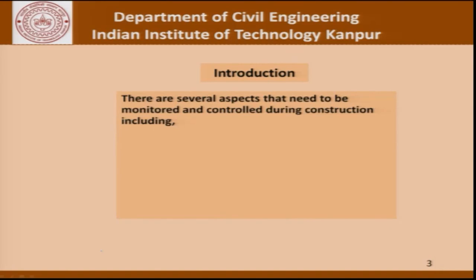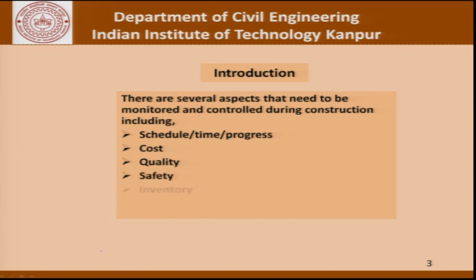There are several aspects in a project that need to be monitored and controlled during construction. These aspects include scheduling, time and progress, cost, quality, safety, inventory, and so on.